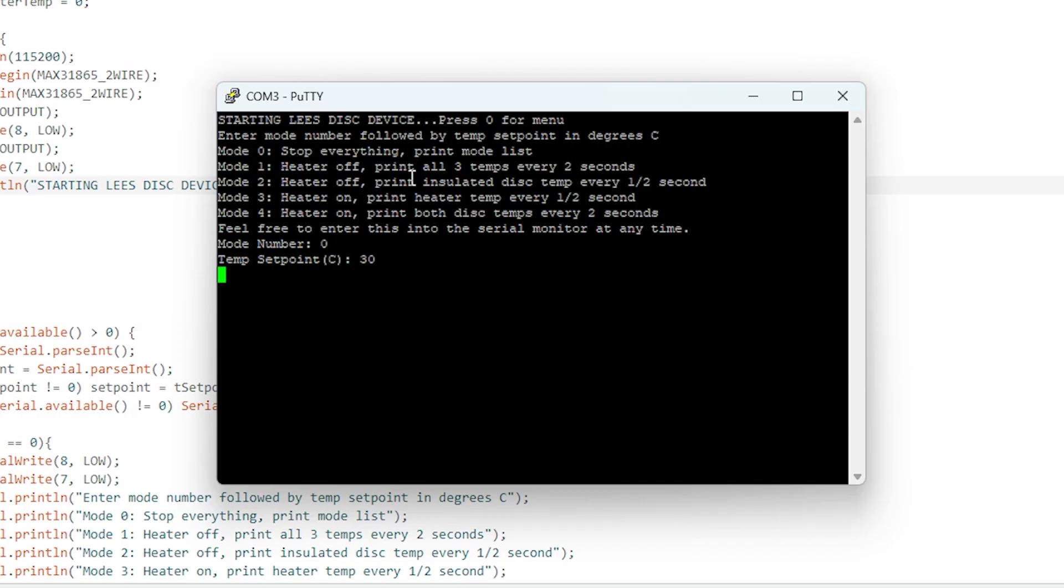Mode 0 turns off everything and prints the mode list. Mode 1 turns the heater off and prints all three temperatures every two seconds. Mode 2 turns the heater off and prints the insulated disk temperature every half second. This is useful for when you're trying to measure that rate of change of temperature of the top brass disk as it cools down. Mode 3 turns the heater on and prints the heater temperature every half second. This is useful for when you're trying to heat up the device and watch for when it reaches a steady state. Mode 4 turns the heater on and prints both disk temperatures every two seconds. This is very useful for actually taking that delta T measurement at steady state for the device.